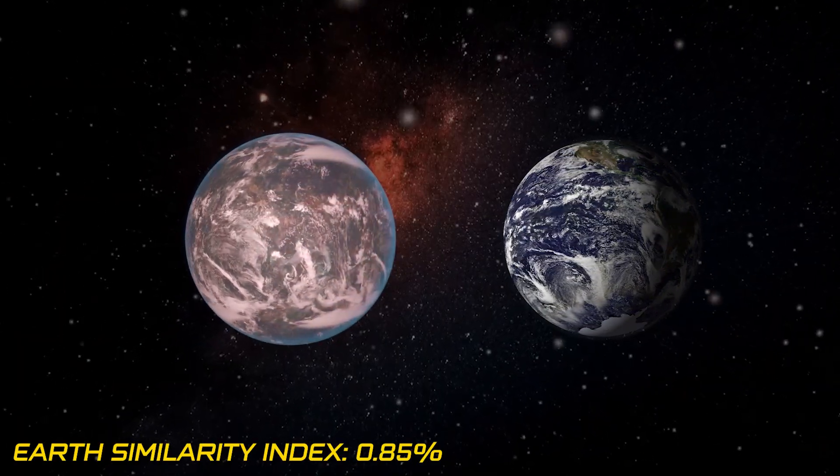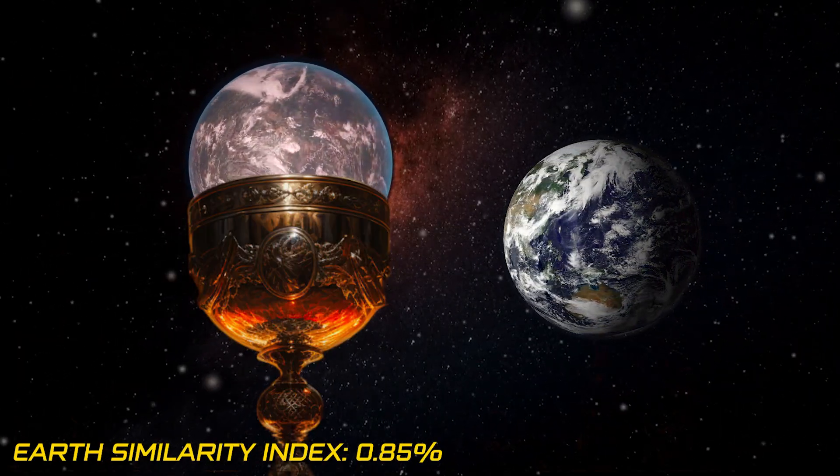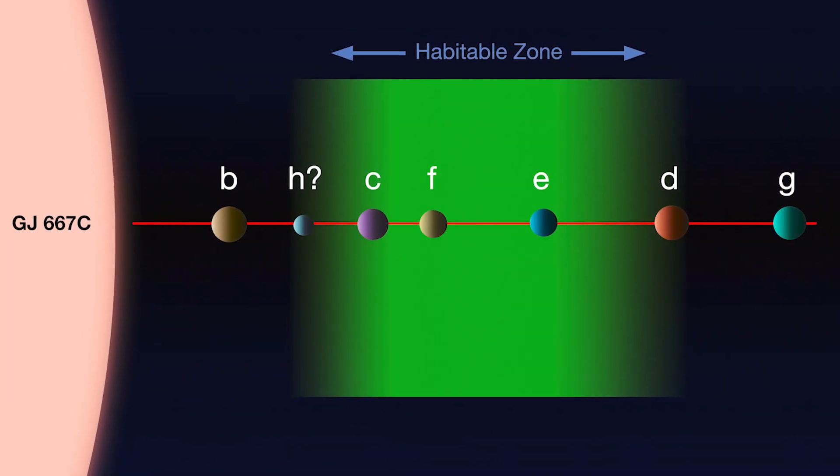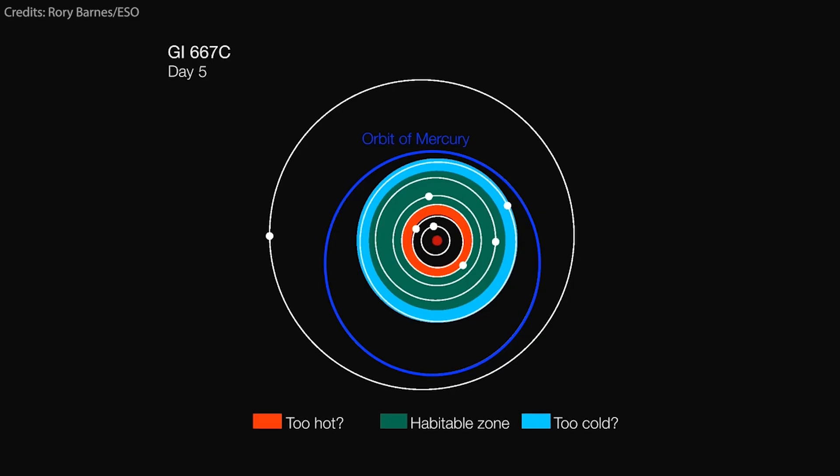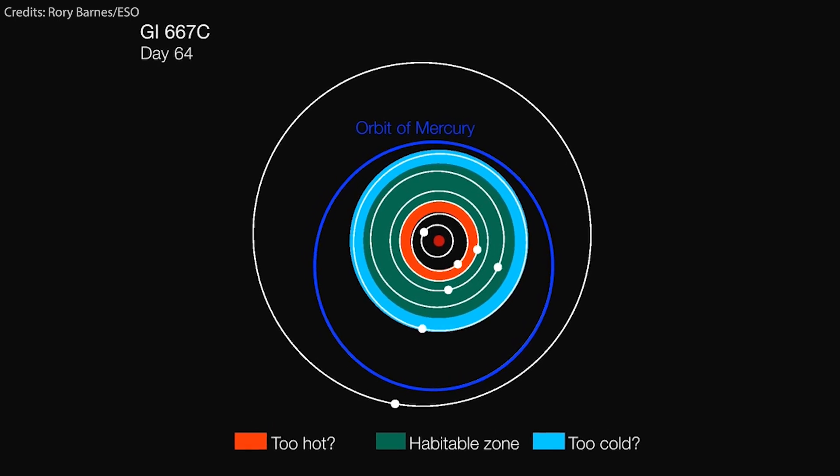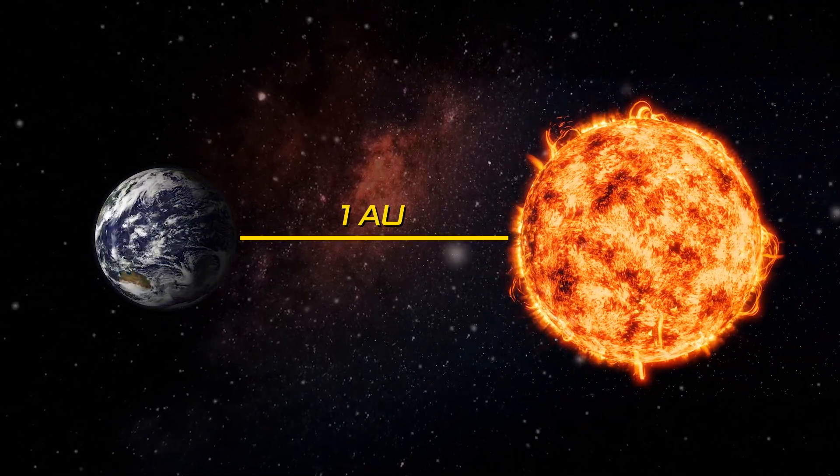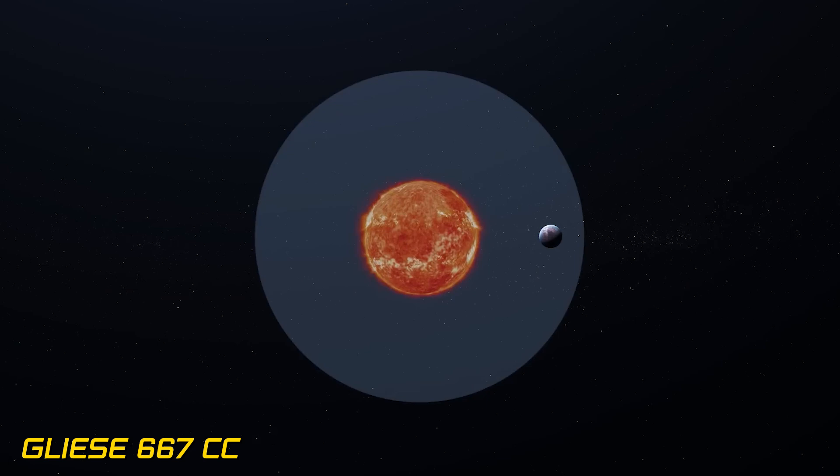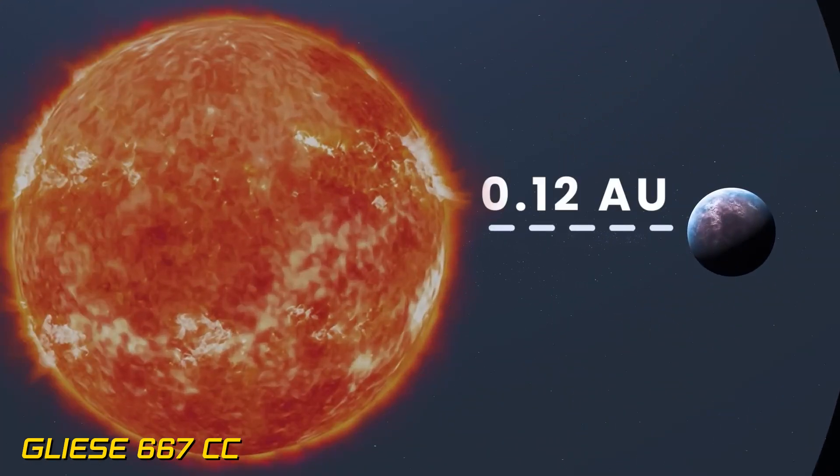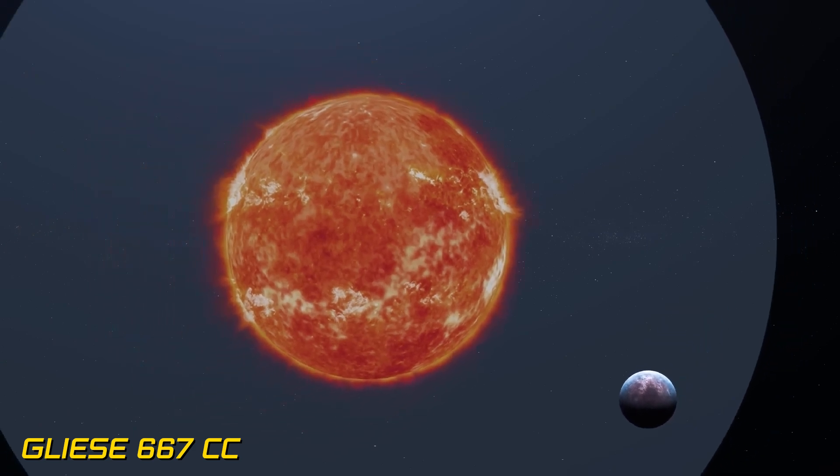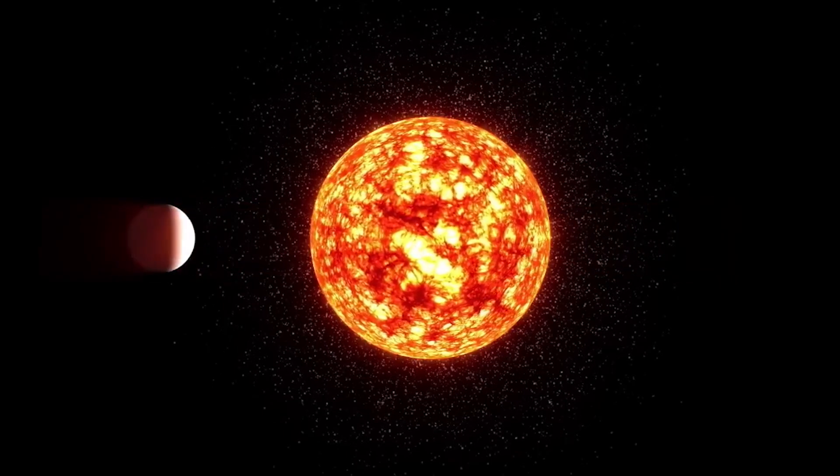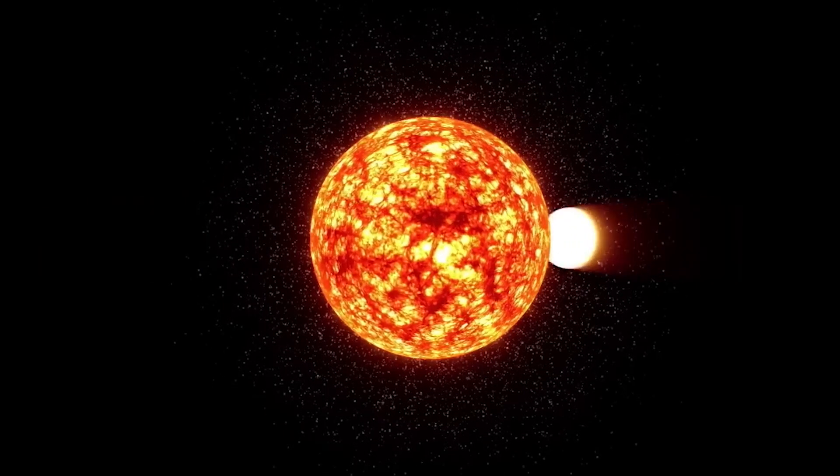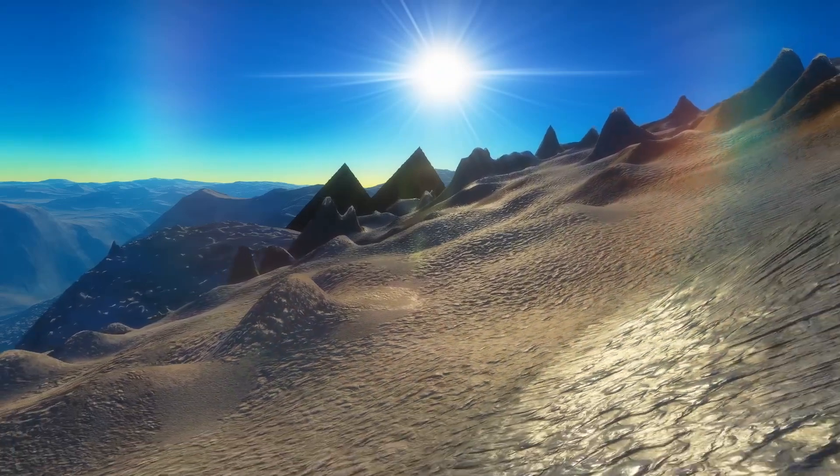Sporting an Earth-similarity index of 0.85, it's hailed as the holy grail of extrasolar planets. Now here's where things get interesting. Due to the red dwarf's low energy output, its habitable zone snuggles up remarkably close, ranging from 0.11 AU to 0.23 AU, entirely within the orbit of Mercury. For comparison, Earth sits comfortably at around 1 AU from the Sun. Gliese 667-CC dances around its parent star about 8 times closer than Earth, circling the red dwarf every 28 days. This close proximity likely locks it tidally, resulting in one side perpetually bathed in sunlight, while the other languishes in eternal darkness. Such extreme temperature swings likely play a pivotal role in shaping the exoplanet's climate.